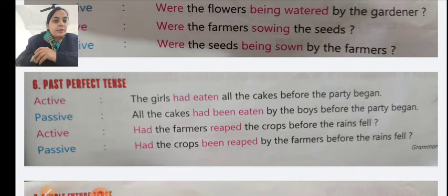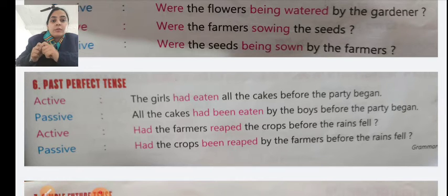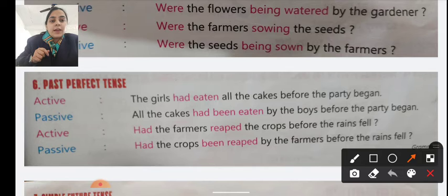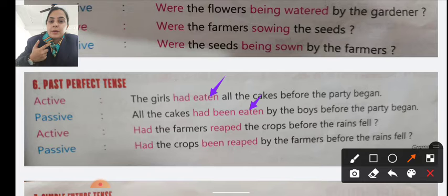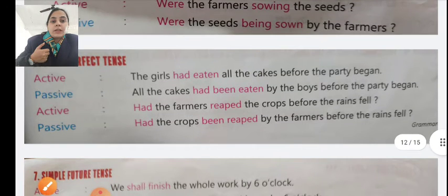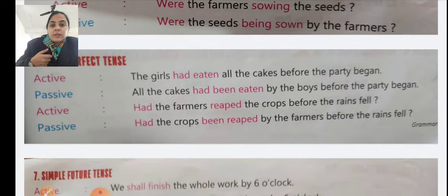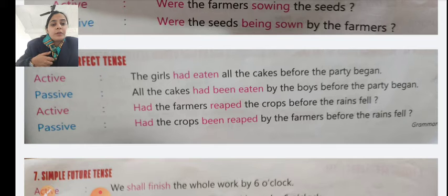Active voice: 'The girls had eaten all the cakes before the party began.' Here you can see the verb forms: had, have, and had been are used. Passive voice: 'All cakes had been eaten by the girls before the party began.' Active: 'Had the farmers reaped the crop before rains fell?' Passive: 'Had the crops been reaped by the farmers before the rains fell?'